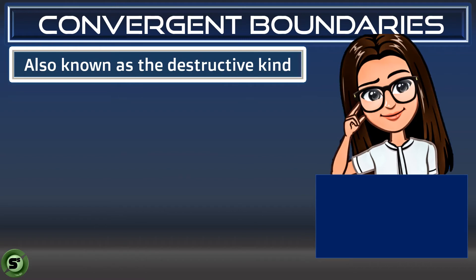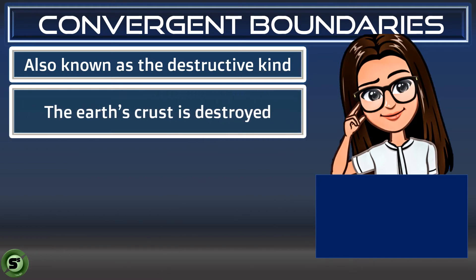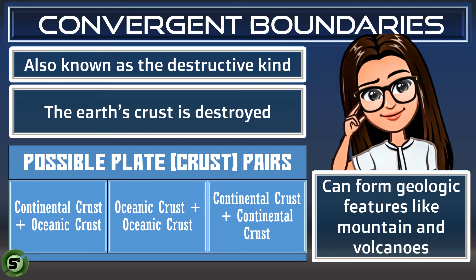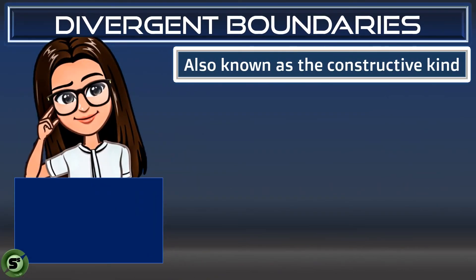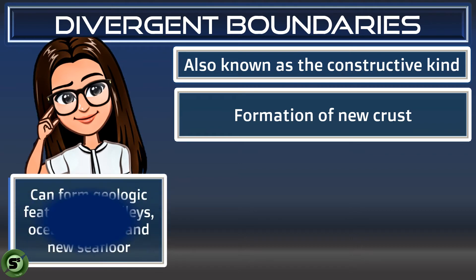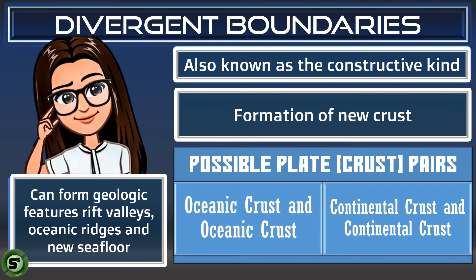Convergent boundaries are also known as destructive boundaries. When two plates collide, the earth's crust is being destroyed in some ways; however, this type of boundary leads to the formation of geologic features like mountains and volcanoes. Converging plates also cause earthquakes and sometimes result in tsunamis. There are three types of converging plates: continental crust to oceanic crust, oceanic crust to oceanic crust, and continental crust to continental crust. Divergent boundaries are also called constructive boundaries. The splitting plates result in the formation of new crust, usually on the sea floor, leading to wider oceans and geologic features like rift valleys and ocean ridges. There are two kinds: oceanic crust to oceanic crust separation, and continental crust to continental crust separation.